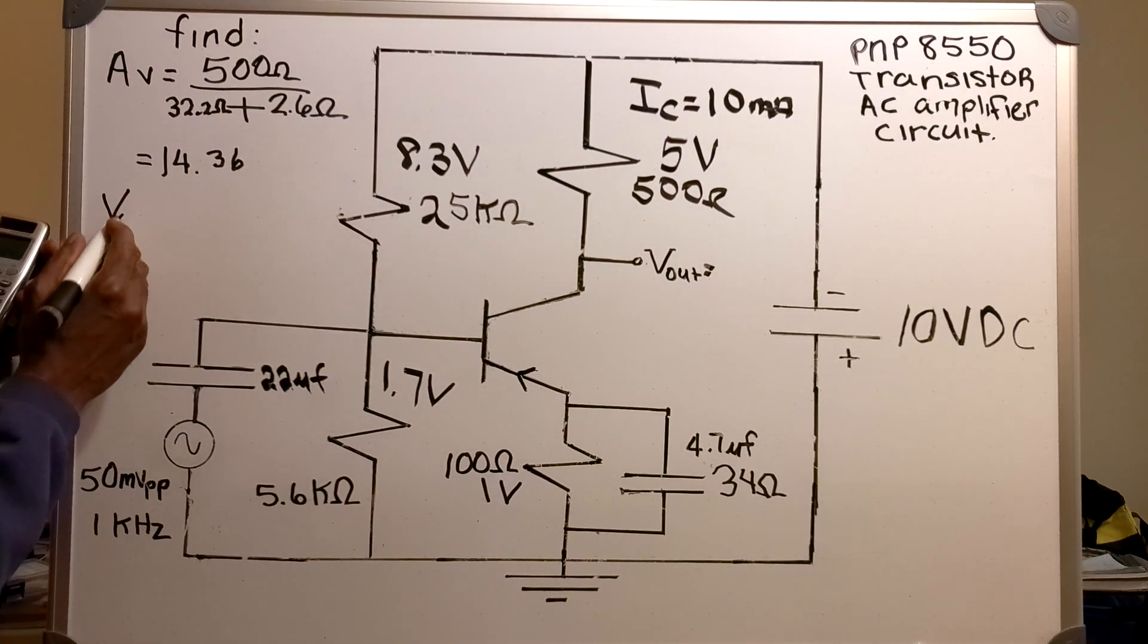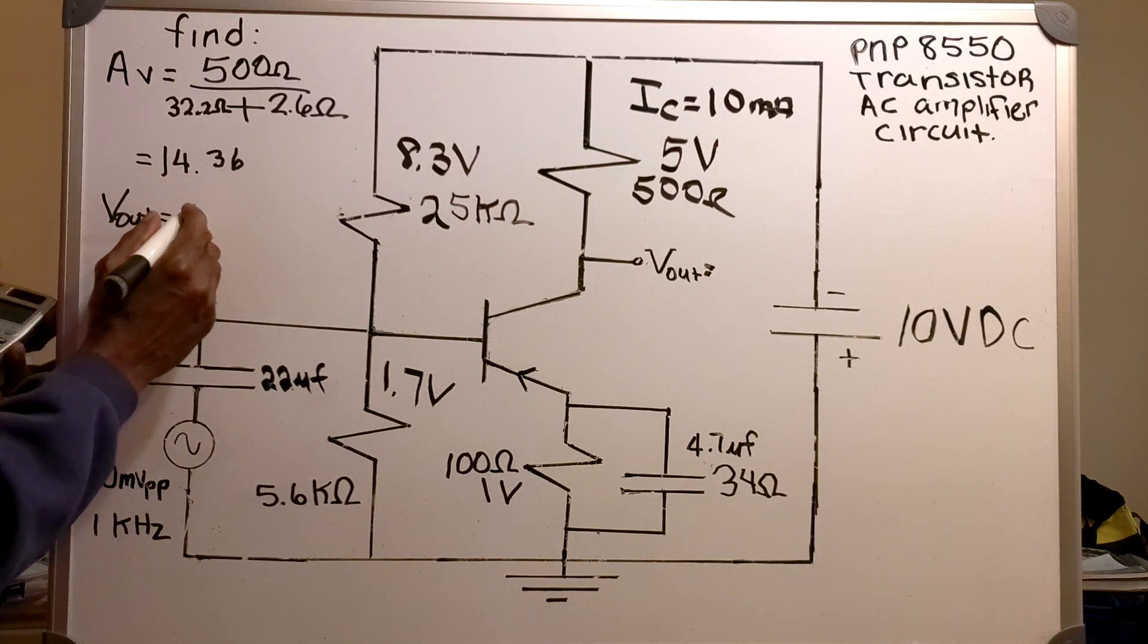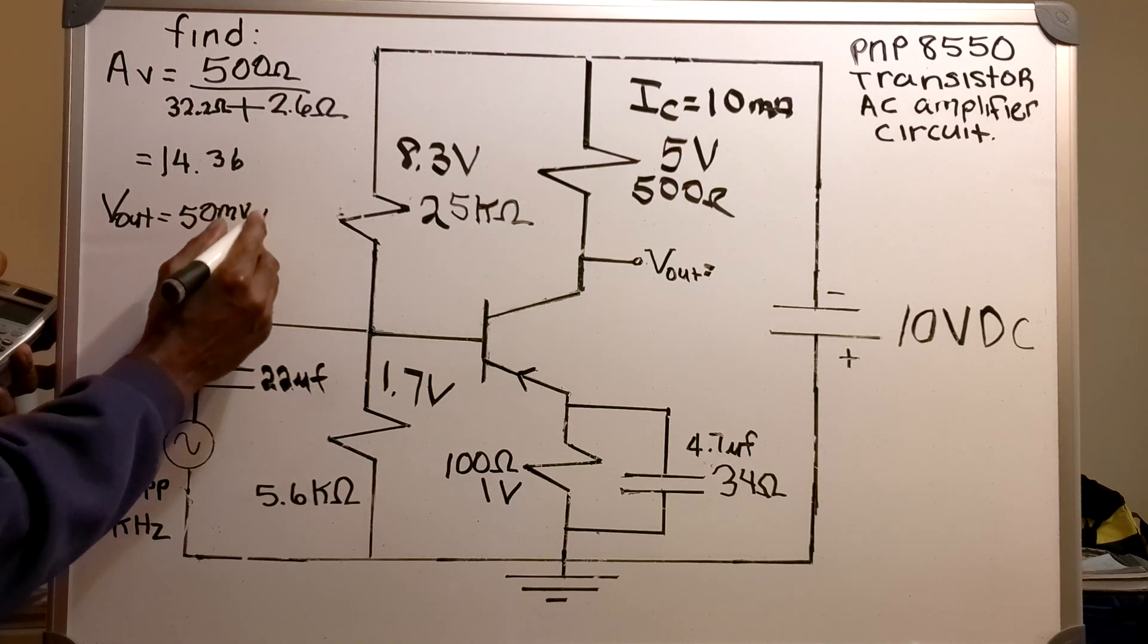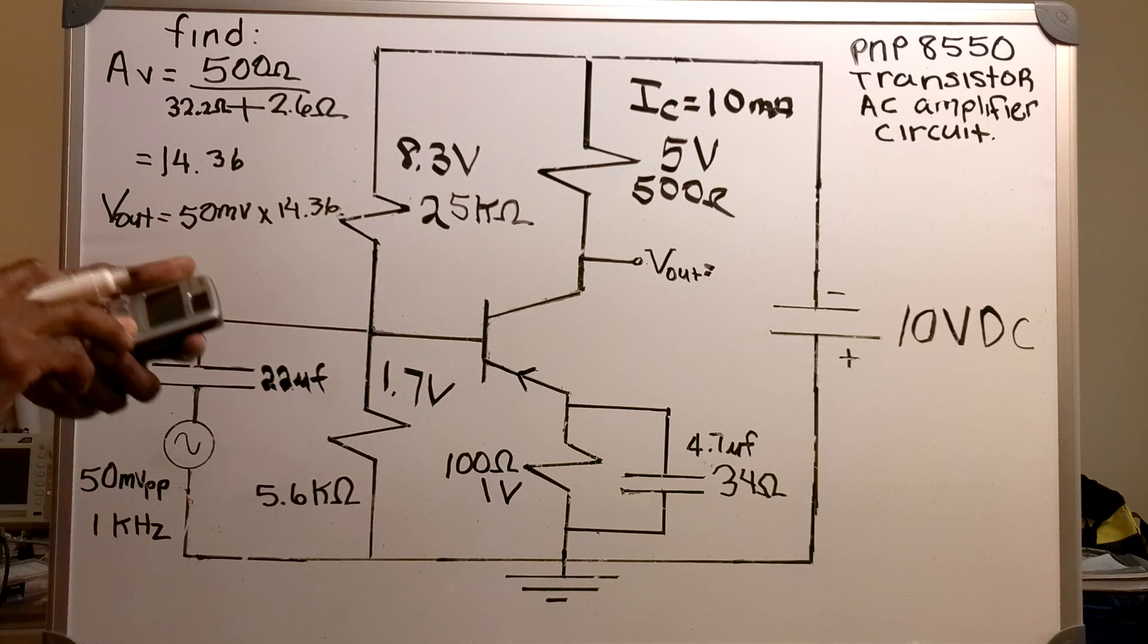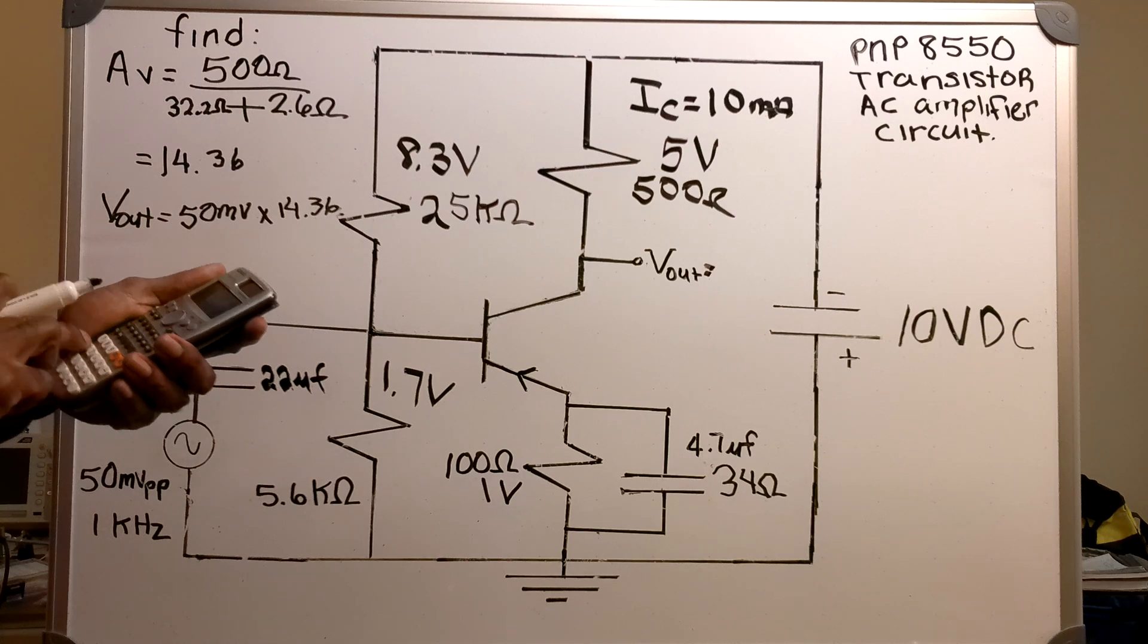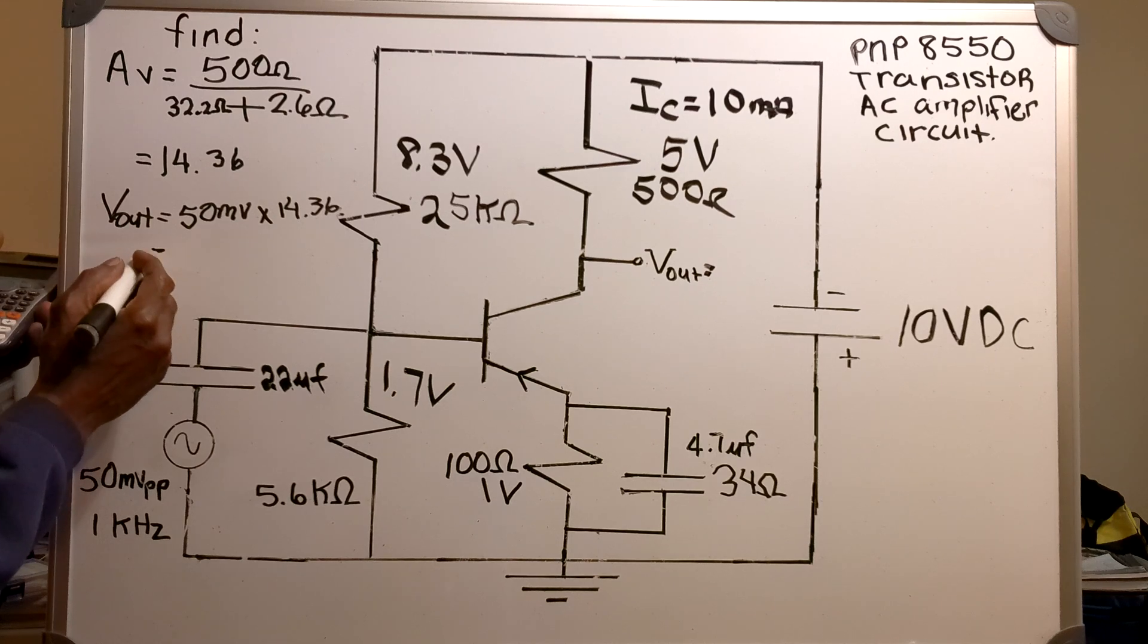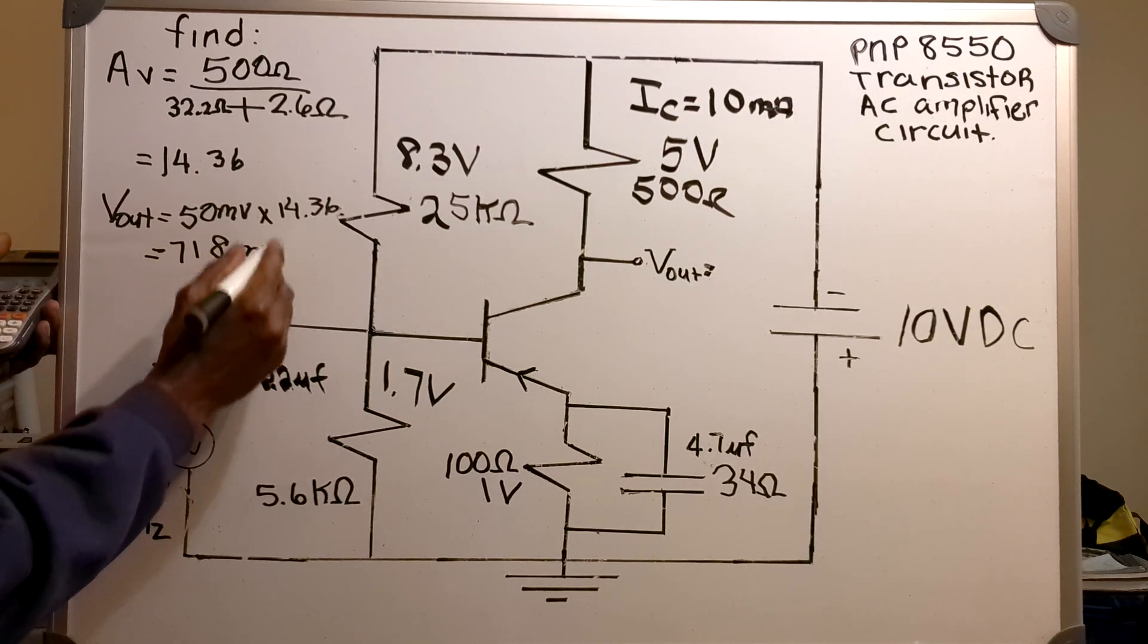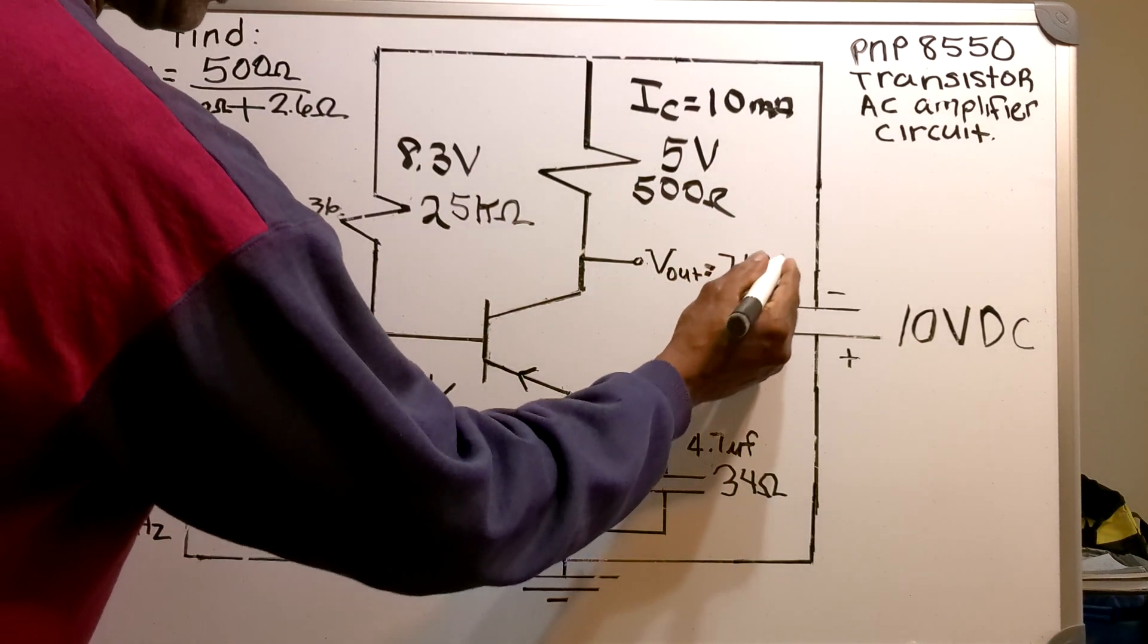Now for V out, I'm multiplying my 50 millivolt input by 14.36. 50 millivolt times 14.36, and that gives me a V out of 718 millivolts.